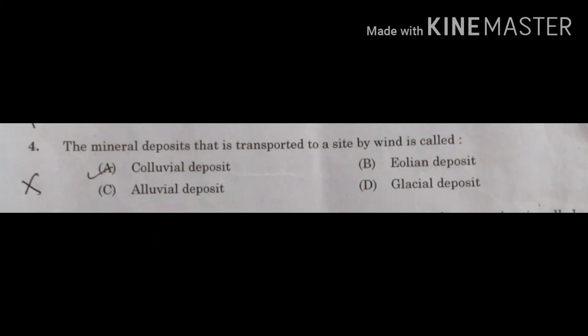The next question: a mineral deposit transported to a site by wind is called? Option A, colluvial deposit, refers to deposits transported by gravity. Option B, eolian deposit, refers to deposits transported by wind activity — that is the correct answer. Option C, alluvial deposit, refers to sediments deposited by river action. Option D, glacial deposit, refers to deposits by moving glaciers — large icebergs. The correct option is B, eolian deposit.